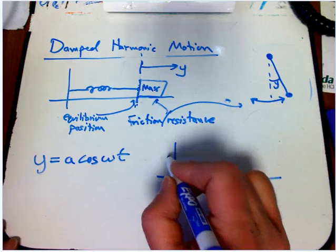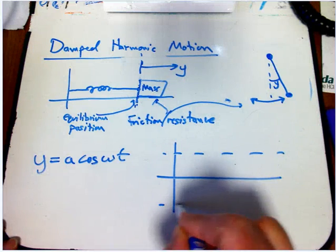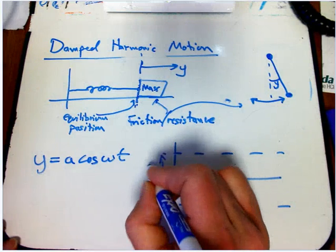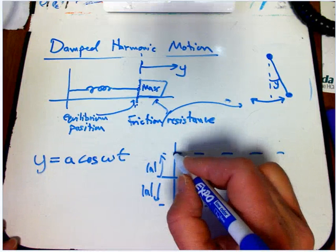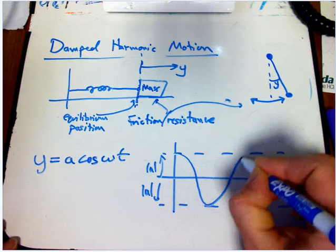We're going to get a graph that has amplitude absolute value of a. If a is positive and that's a cosine, we're going to get something like this.